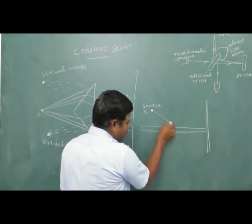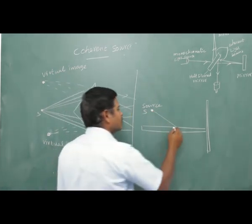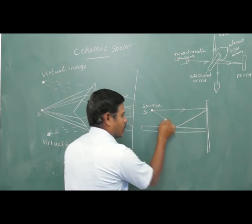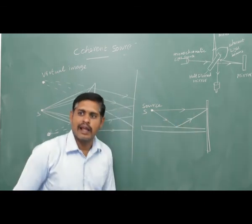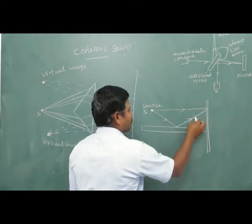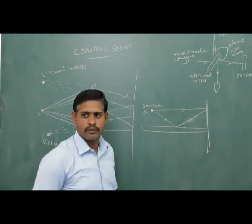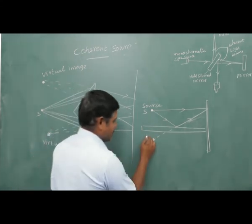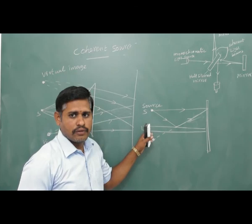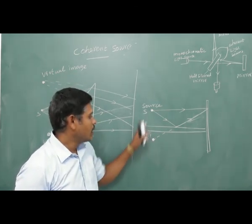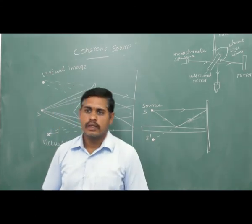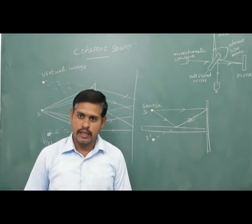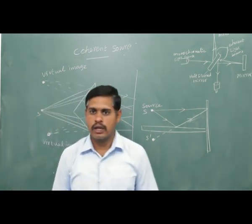This is the third method: source and image. Here the source and its virtual image are the two coherent sources. For Lloyd's mirror, there is a large mirror. The source reflects off the mirror, and the virtual image of the source is formed. The source and its virtual image together form two coherent sources. That is all for these techniques. Thank you.